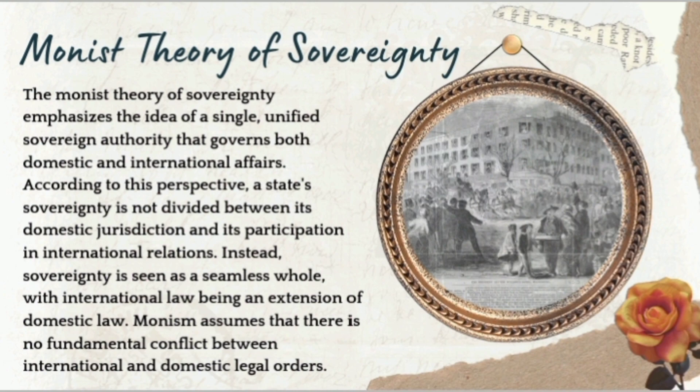The monist theory of sovereignty is self-explanatory — 'monos' implies a single unified sovereign authority that governs both domestic and international affairs. According to this perspective, a state's sovereignty is not divided between domestic jurisdiction and its participation in international relations. Power rests in one single person. There is also a famous quotation: 'to divide sovereignty is to destroy sovereignty,' meaning sovereignty no longer exists in its true meaning if it is divided.